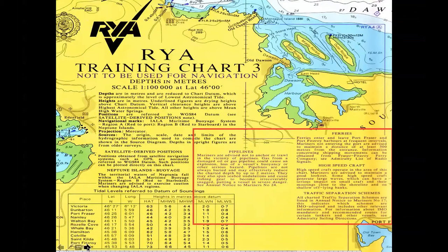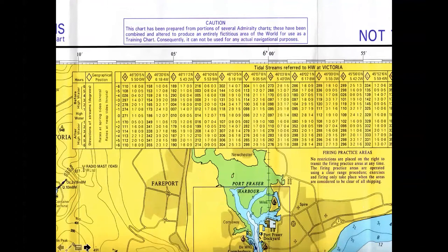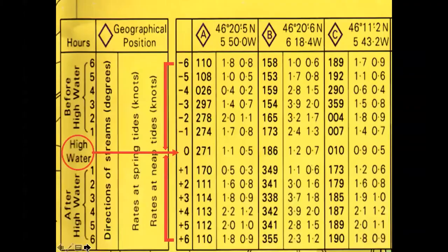There's also a set of notes in magenta, which clearly means they're important. These notes are relevant to this particular chart and will be different on other charts — they cover pipelines, areas, high-speed craft, traffic separation schemes, and that sort of thing. Have a look at the particular chart you're using when you go somewhere different, as there will be different notes.